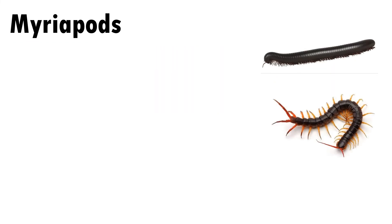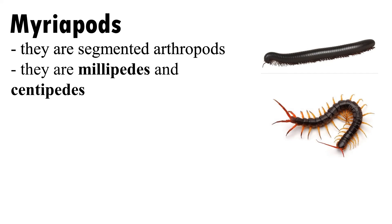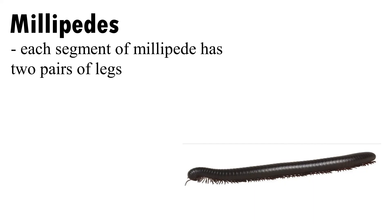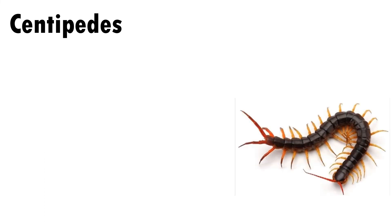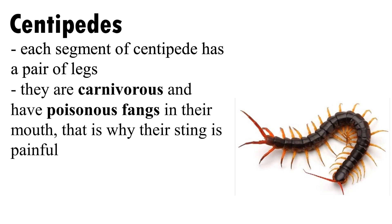Myriapods are segmented arthropods. They are millipedes and centipedes. Each segment of a millipede has two pairs of legs — they are detritivores, meaning they feed on dead plant and animal matter. Each segment of a centipede has one pair of legs — they are carnivorous and have poisonous fangs in their mouth, which is why their sting is painful.